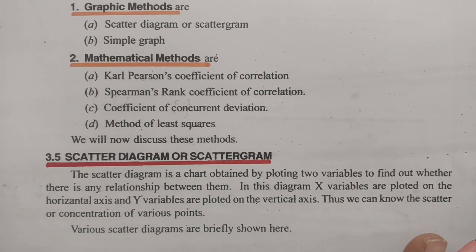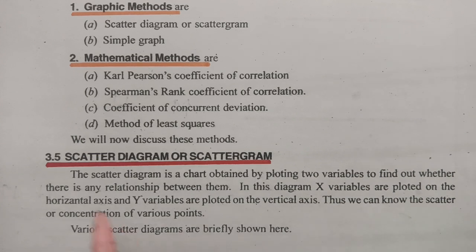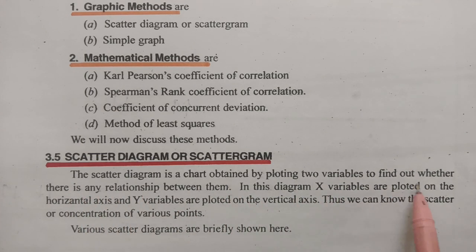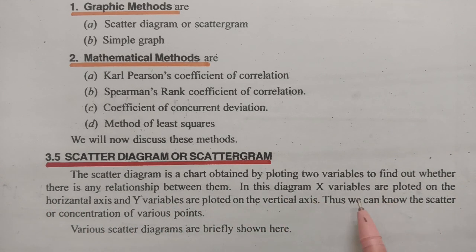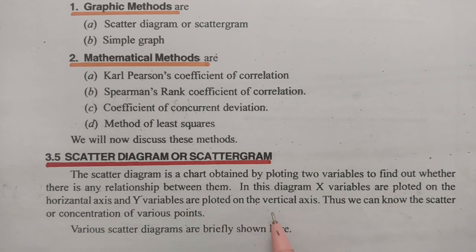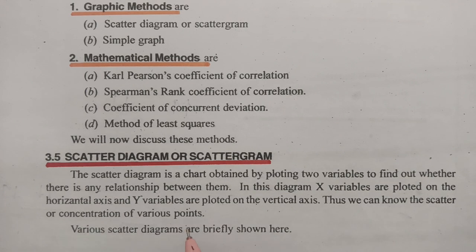The first one is the scatter diagram or scattergram. The scatter diagram is a chart obtained by plotting two variables to find out whether there is any relationship between them. In this diagram, the X variables are plotted on the horizontal axis and Y variables are plotted on the vertical axis. Thus we can know the scatter or the concentration of the various points.